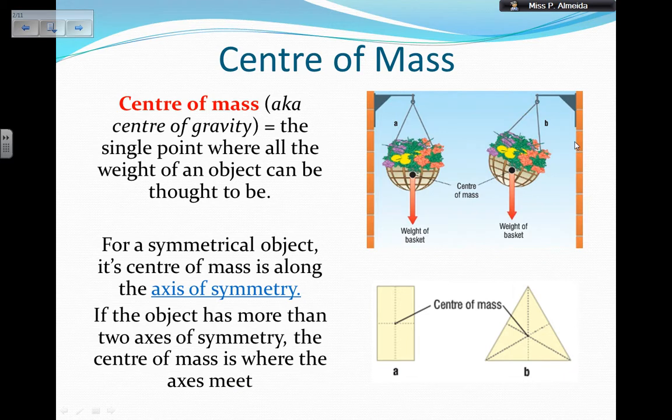So, what is center of mass? Center of mass, also known as center of gravity, is a single point where all the weight of an object can be thought to be. When I say weight, it's the same as saying the force of gravity. So that means when I'm doing diagrams with forces, I always say the gravity should come from the center of the object. We can imagine that all the weight distributed around the object can be concentrated at a specific point, and this gives you the same effect as all the weight around the object.